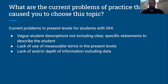Some current problems of practice that caused me to choose this topic are vague student descriptions in the IEP, specifically in the present levels section that do not include clear, specific statements that describe who the student is, what their strengths and weaknesses are, and there's a lack of use of measurable terms — specifically taking data and putting it into the present levels to allow for better decision making and a greater foundation from which to start and plan the program for the student.